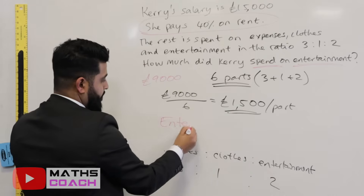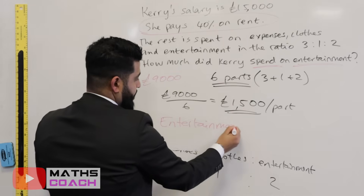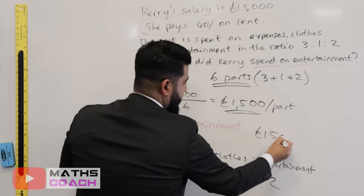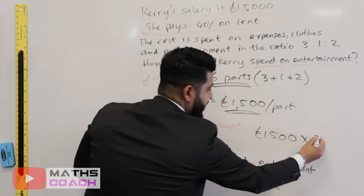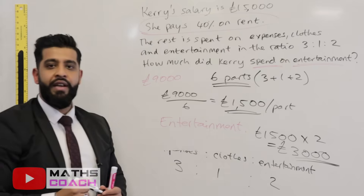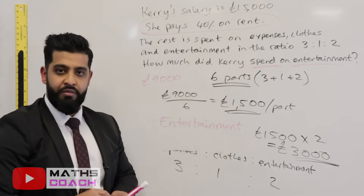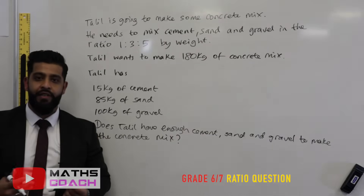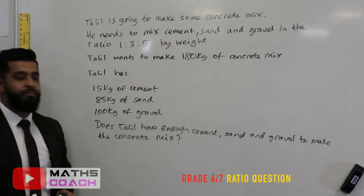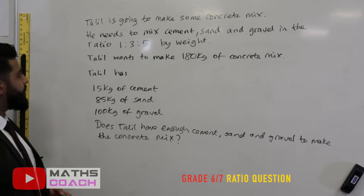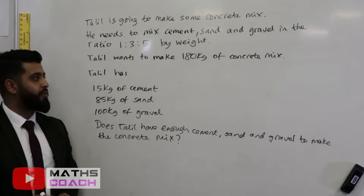Entertainment is two parts, so we calculate 1,500 times two equals 3,000 pounds. Kerry spent three thousand pounds on entertainment. Our final question appeared in a previous exam paper. Talil is going to make concrete mix. He needs to mix cement, sand and gravel in the ratio one to three to five parts by weight. Talil wants to make 180 kilograms of concrete mix.